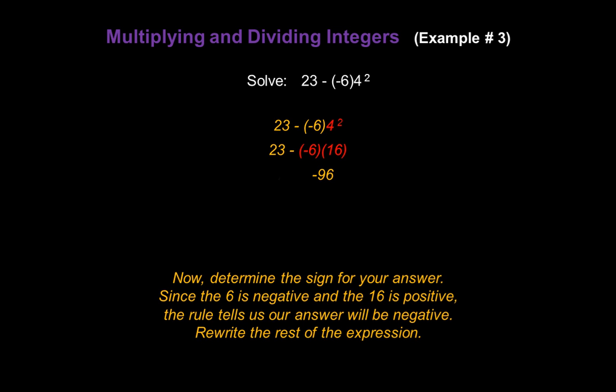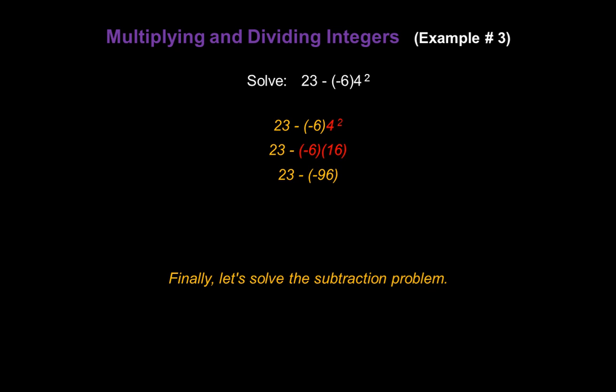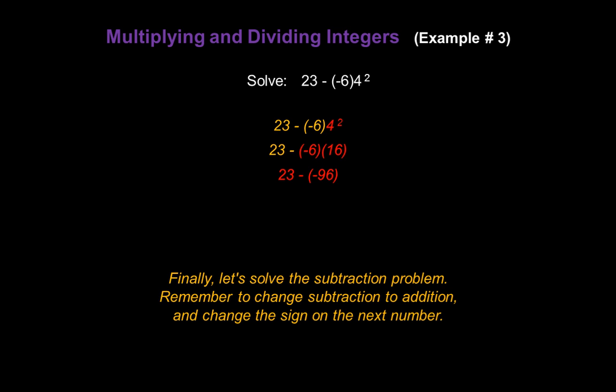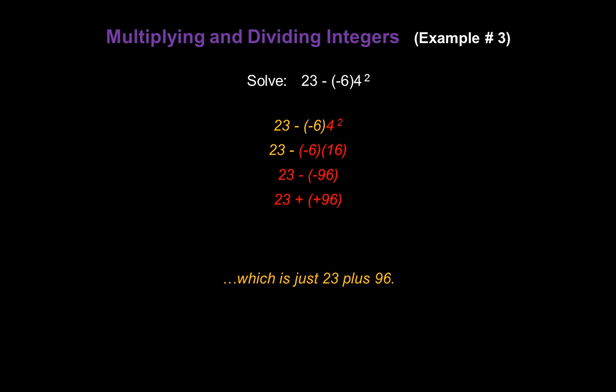Now let's bring down the rest of the problem, so we have 23 minus negative 96. We don't like to subtract integers — we turn them into addition problems using SSDD: same signs find the sum, different signs find the difference. Change subtraction to addition and change the sign on the next number. Our expression becomes 23 plus positive 96, which is the same as 23 plus 96. So our answer is 119.